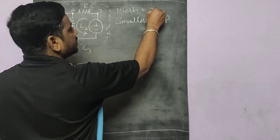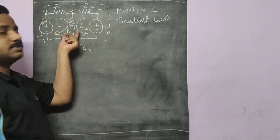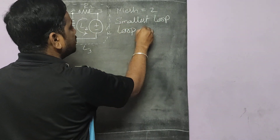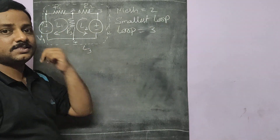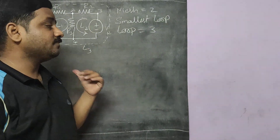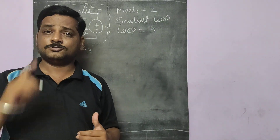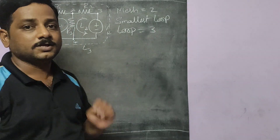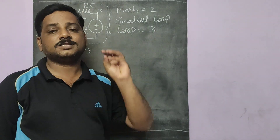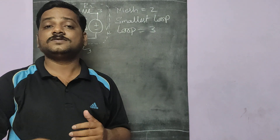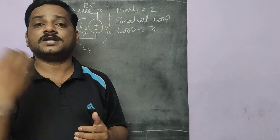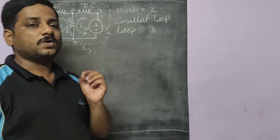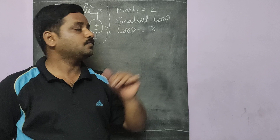So the number of meshes is 2, whereas the number of loops in the circuit is 3. That is the difference. In mesh analysis you should identify the number of meshes, not just loops. A mesh is the smallest loop in the circuit within which you can't find another loop.